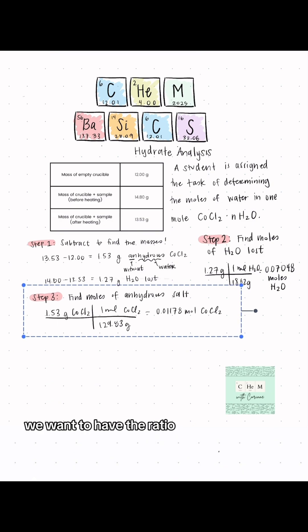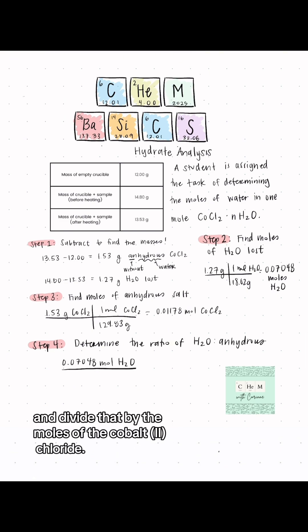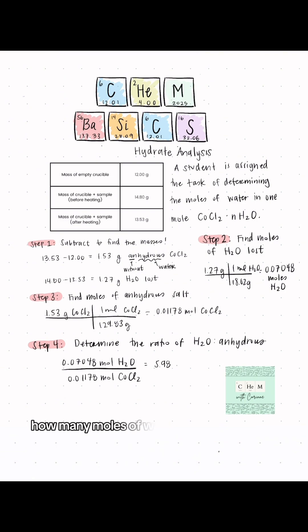So now what we wanna do is we wanna have the ratio of the moles of water per every one formula unit of our ionic salt. So how are we gonna do that? We're literally gonna take our moles of water and divide that by the moles of the cobalt to chloride. So basically, your goal is to see if I had one mole of cobalt to chloride, how many moles of water would I have? We do this, we get 5.98 that rounds up to six. So this is cobalt to chloride hexahydrate.